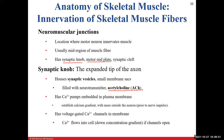In our synaptic knob, we have calcium ion pumps constantly pumping calcium out, creating a calcium gradient — more calcium outside than inside. So when calcium can move across the plasma membrane, it's going to enter the cell. We also have voltage-gated calcium channels. When an action potential comes down the neuron, it triggers the opening of these voltage-gated calcium channels, and calcium can flow down its concentration gradient into our cell.